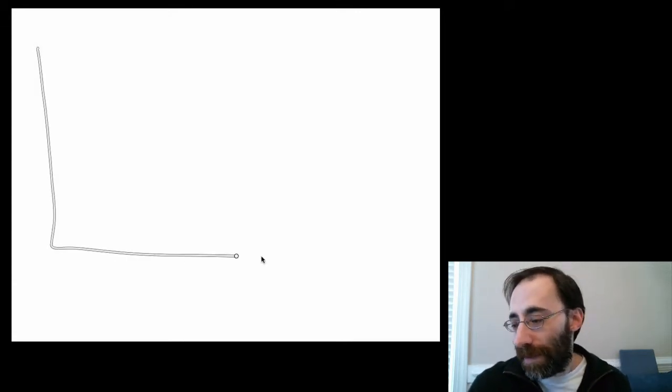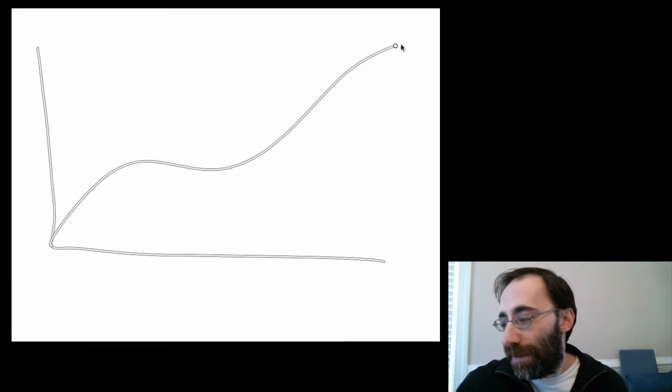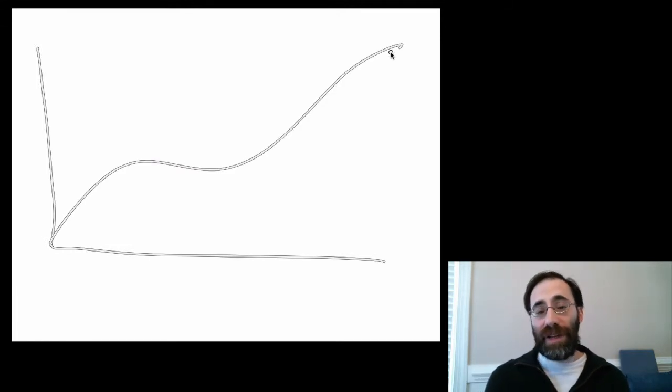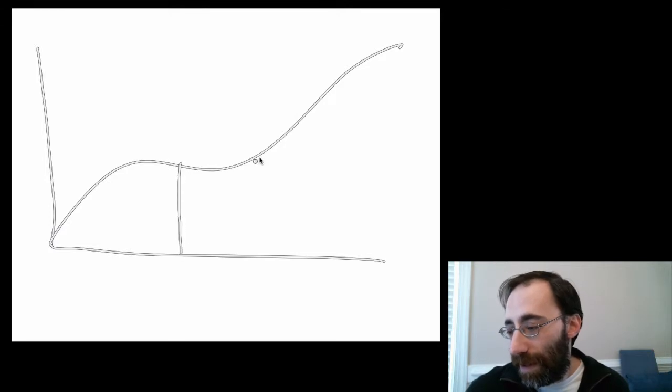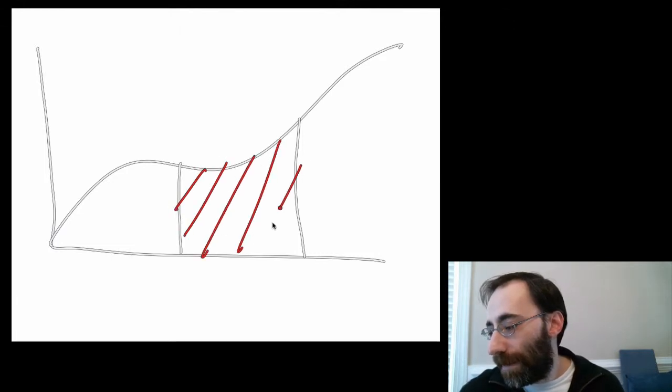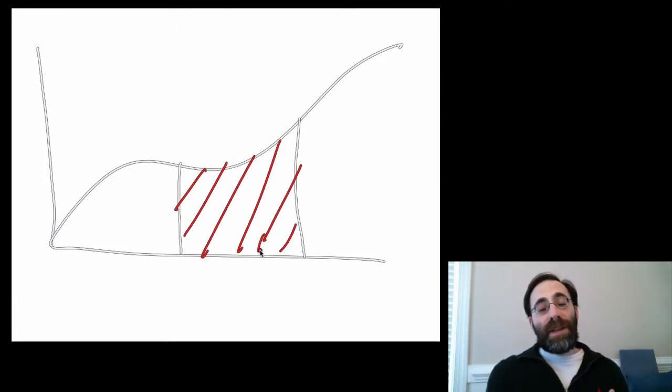To remind you, if this is my curve, we often want to understand the area under the curve between two points. That's this shaded region over here. This region can be computed by computing the definite integral. In one dimension, the definite integral produces a nice, clear number. In more than one, it's not quite as clear, but does reduce the number of variables by one.